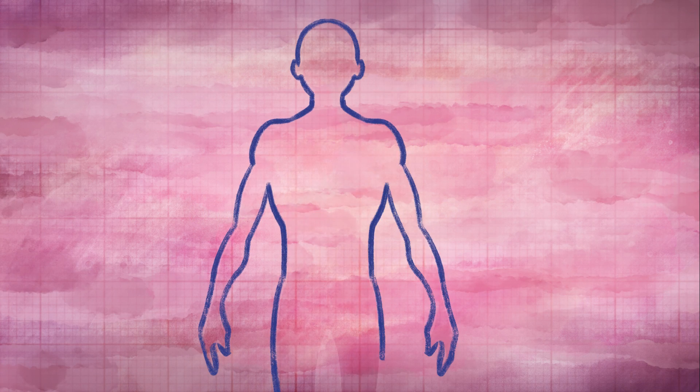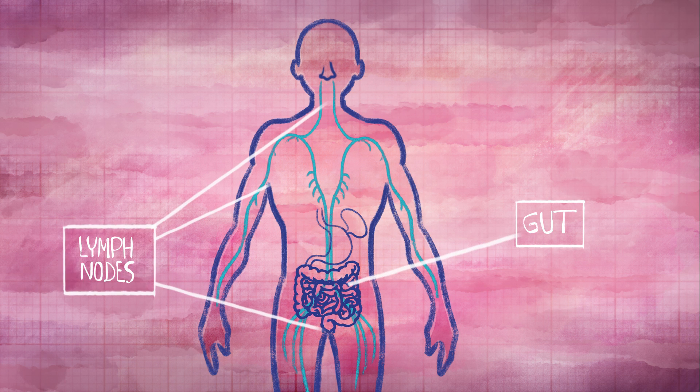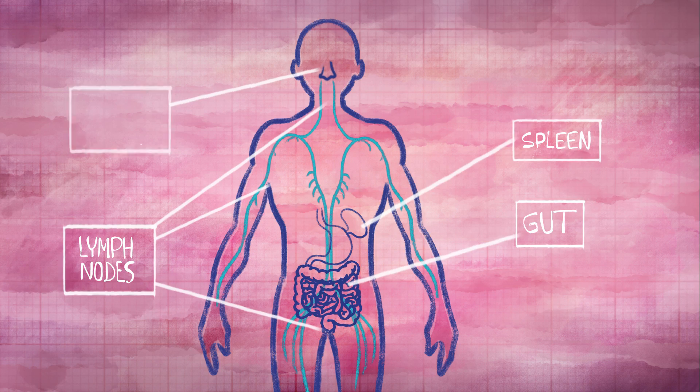Although the infected cells serving as a reservoir of HIV could be anywhere, they tend to congregate in certain hot spots in the body. We know that certain tissues, such as the gut and lymph nodes, are major pockets of reservoir. But other sites are starting to be studied.